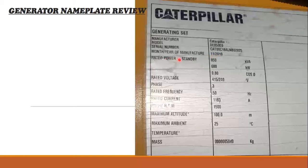Under rated power, we have two types: prime rating and standby rating. Prime rating is for continuous 24-hour operation. Standby rating applies when the generator starts during a power failure. For standby, this unit can give 850 kVA. For prime rating, the same generator is used at 80% — approximately 780 kVA.